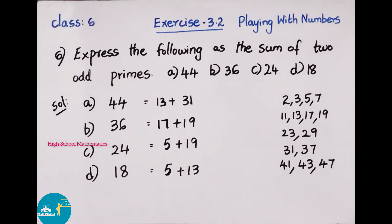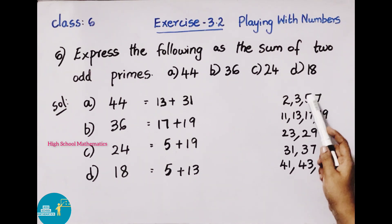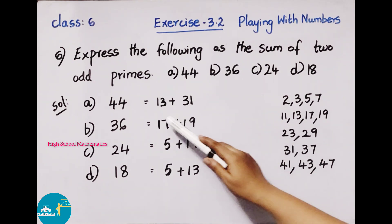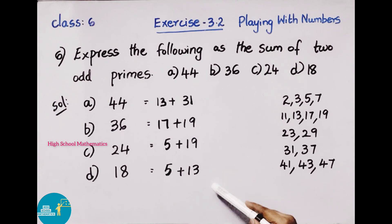Now let's see b) 36. 36 can be written as 17 plus 19, 2 odd primes numbers. Add these and you get 36. Next, c) 24. 24 can be written as sum of 2 odd primes as 5 and 19. 5 plus 19 equals 24. Next, d) 18. 18 can be written as 5 plus 13. 5 and 13 add to get 18.